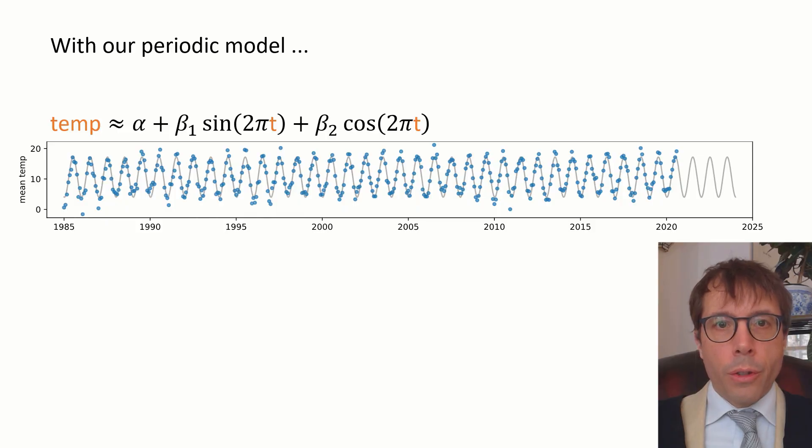In the last video we looked at this climate data set. This graph has monthly average temperatures in Cambridge on the y-axis plotted as a function of time t. We looked at a periodic model and in the last video we saw that a periodic pattern can be expressed with a linear model with the formula shown here. The grey line in the plot shows the fitted model's predictions.